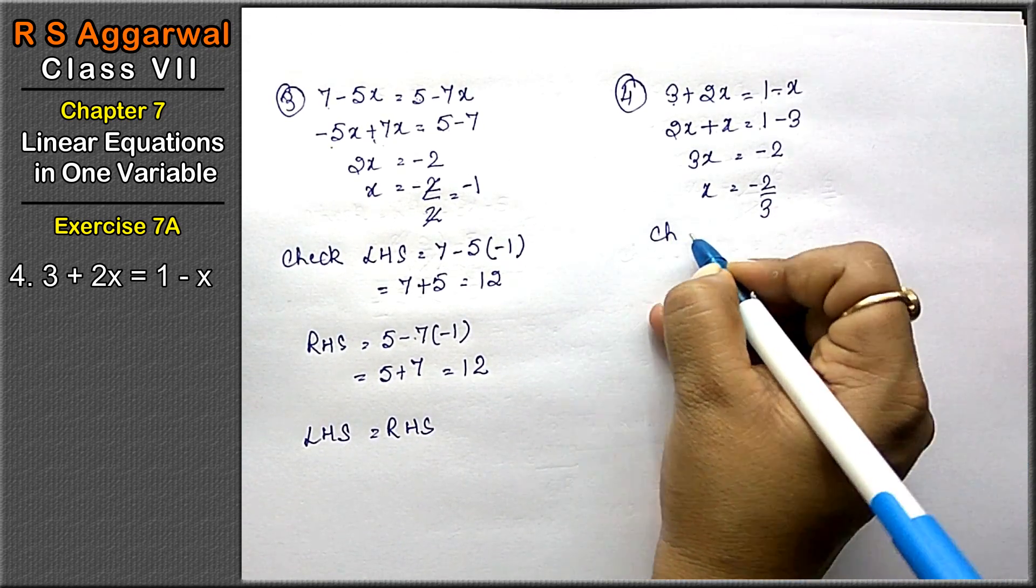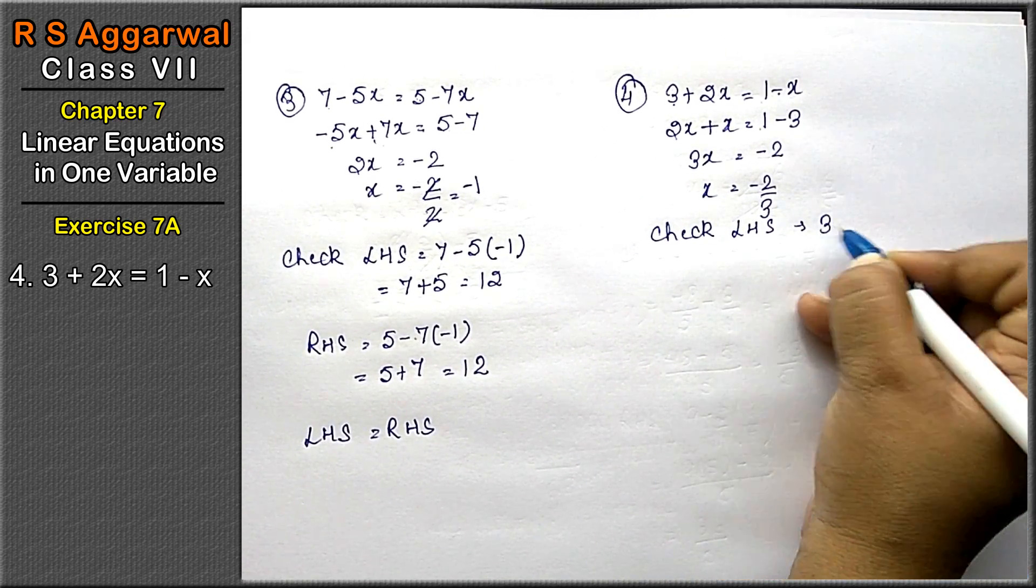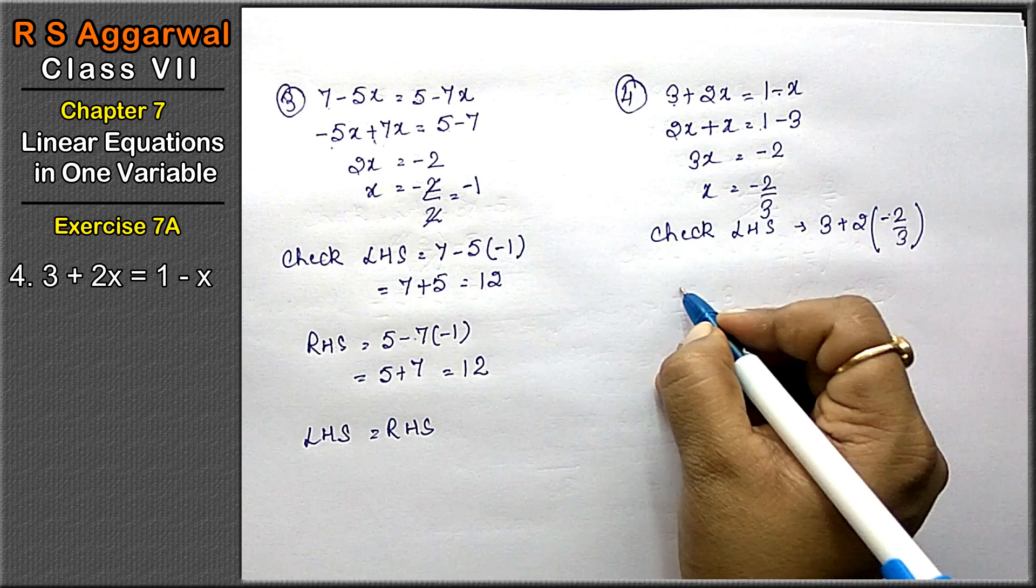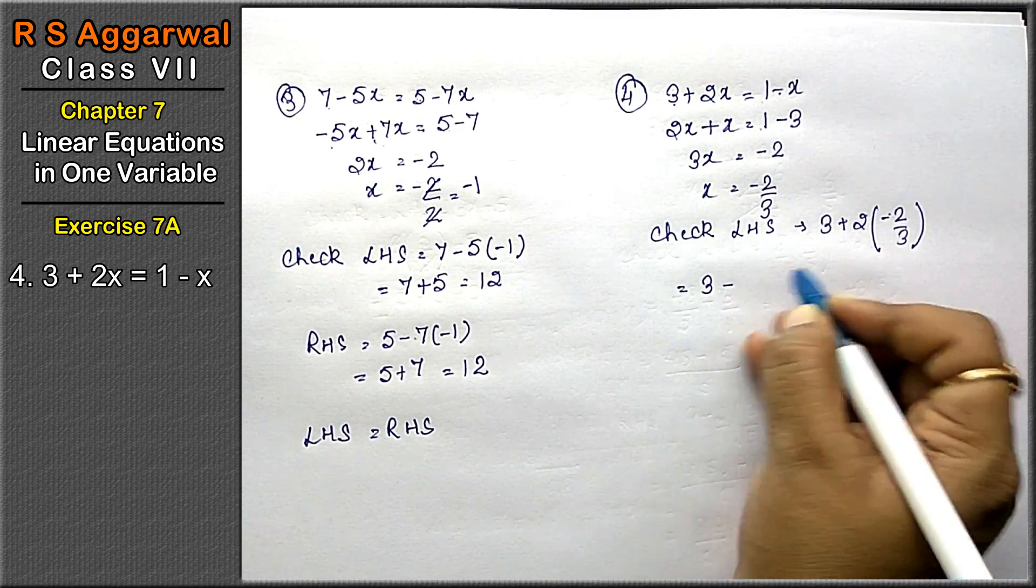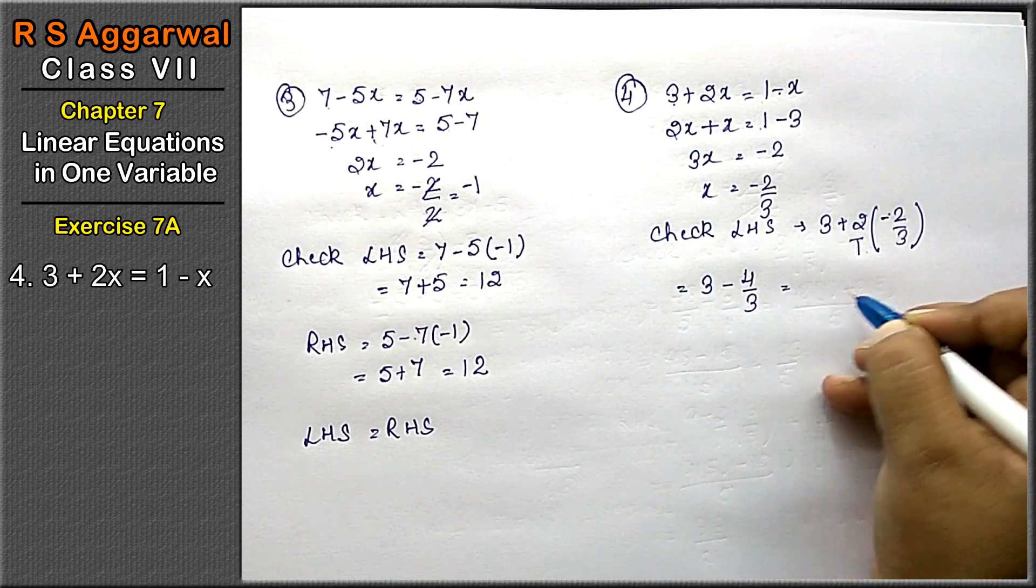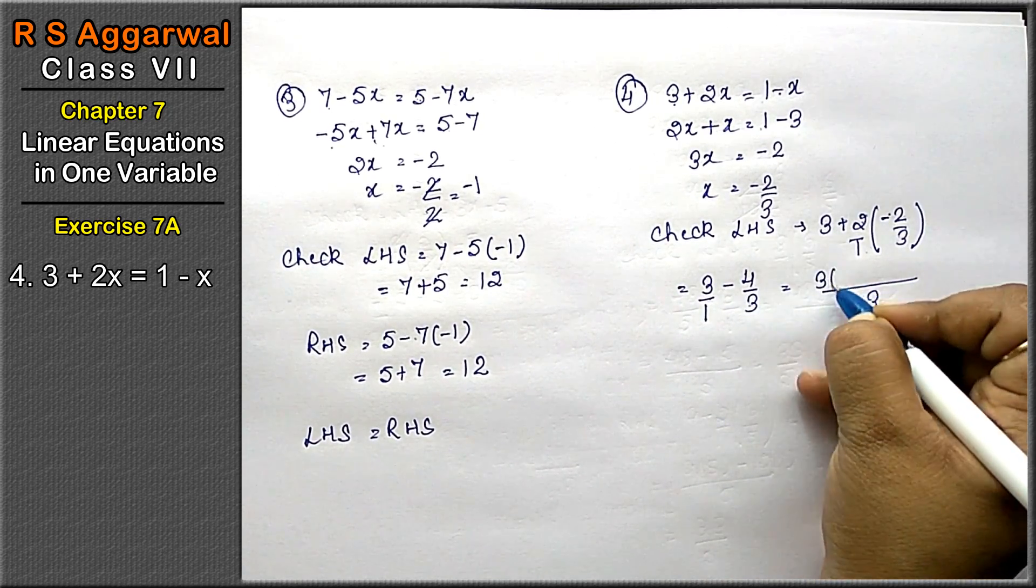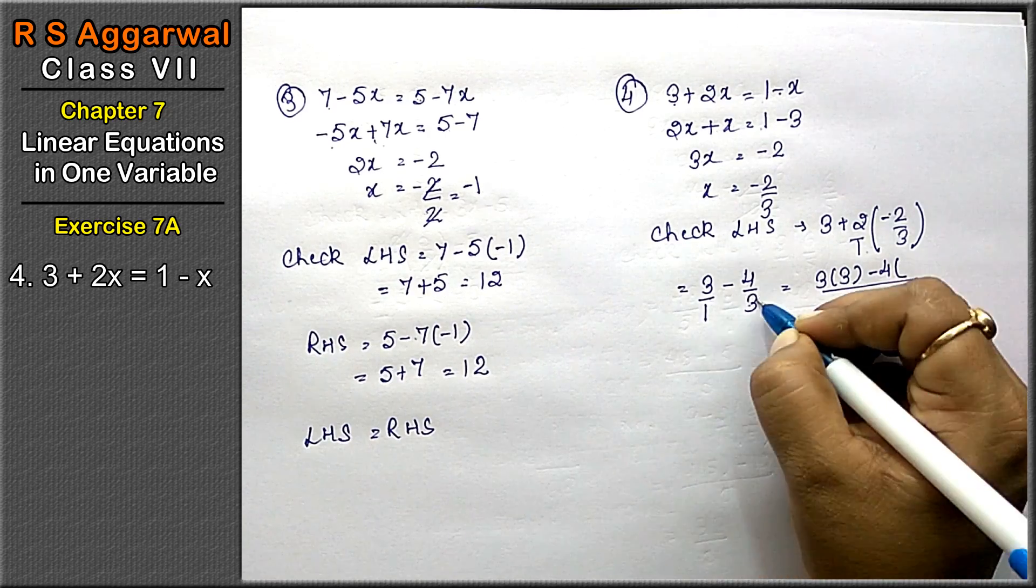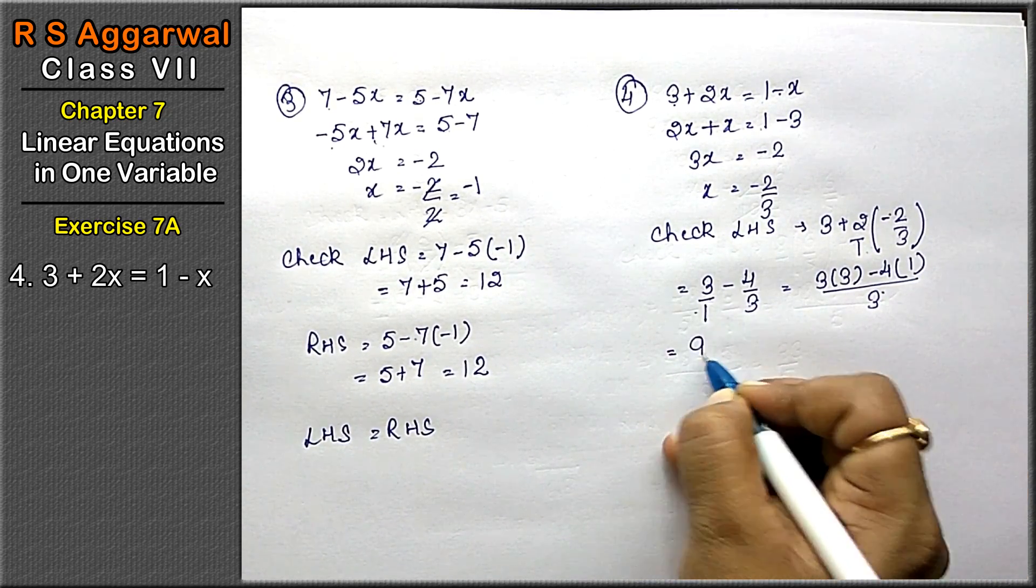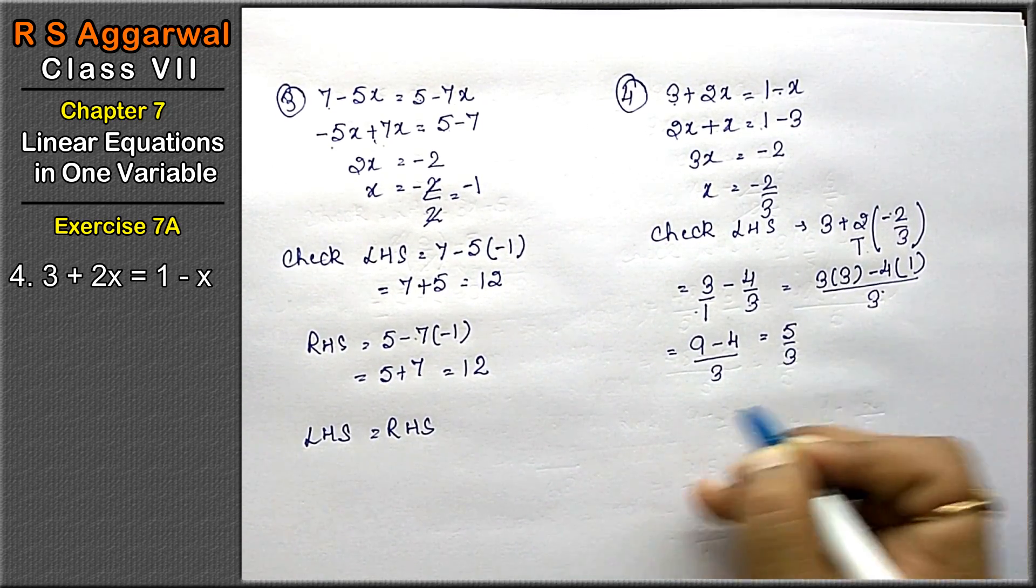Now we will check our left hand side. Left hand side is 3 plus 2 into minus 2 upon 3. 3 plus minus 4 upon 3. Taking LCM as 3: 9 minus 4 upon 3, that means 5 upon 3 is the answer.